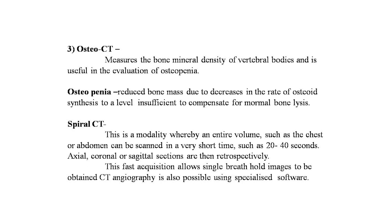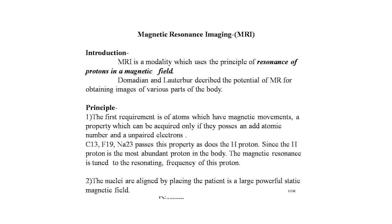Spiral CT allows an entire volume such as the chest or abdomen to be scanned in a very short time — 20 to 40 seconds. Axial, coronal, and sagittal sections are then reconstructed retrospectively. This fast acquisition allows single breath-hold images to be obtained. CT angiography is also possible using specialized software.